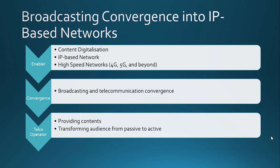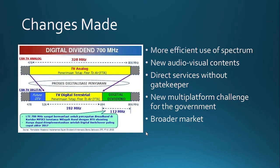Lastly, from the telecommunication operator, they have to provide contents as well as transforming the audience from passive to active consumers. These are the changes that have been made so far: digital broadcasting enables a more efficient use of spectrum and enables new audio-visual content providers such as YouTube, Instagram, TikTok, and Spotify. Content providers can offer services directly to all markets without a gatekeeper. Government instruments to control broadcasting content are challenged by the new multi-platform environment, and broadcasting is becoming not only a more competitive but also a more international market.